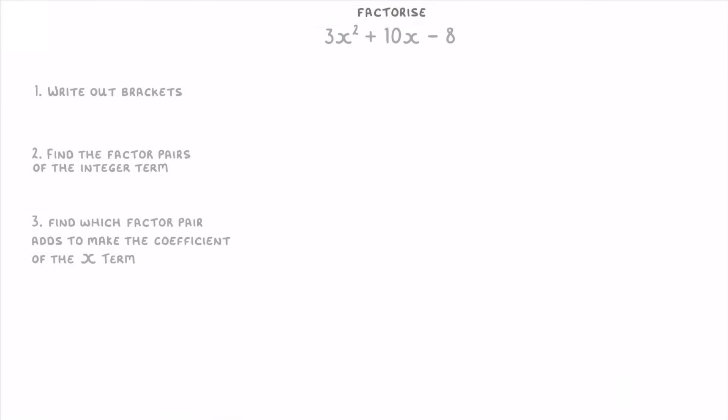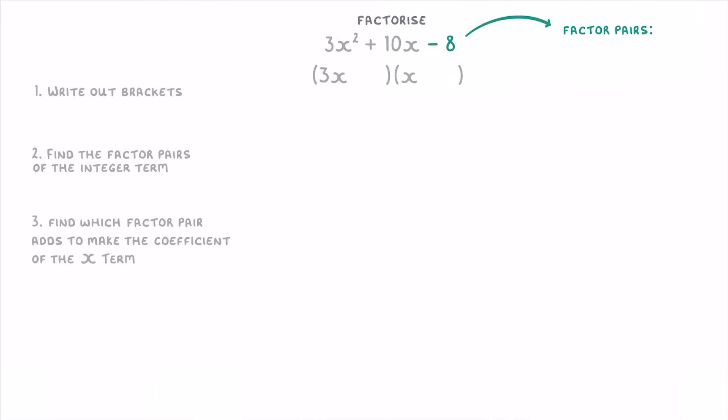Let's try the same thing for this one: factorize 3x² + 10x − 8. The first thing we do is write out our brackets — this time one needs a 3x and the other just an x, because they multiply together to make the 3x² term. Next, list all the factor pairs of the integer term, negative 8.